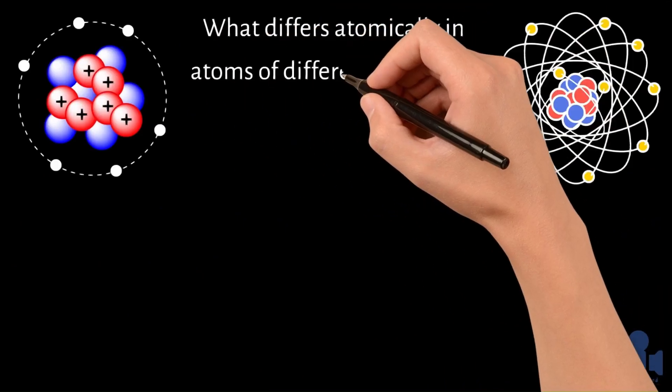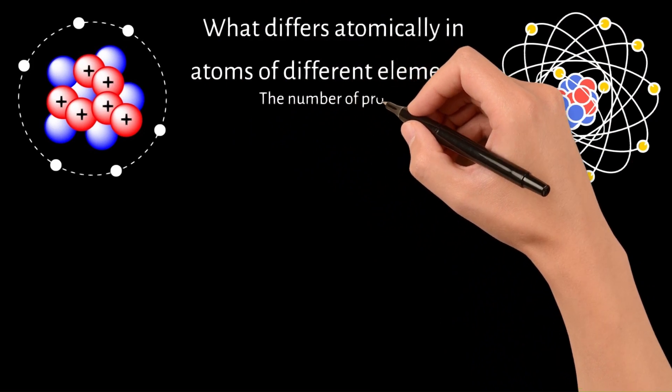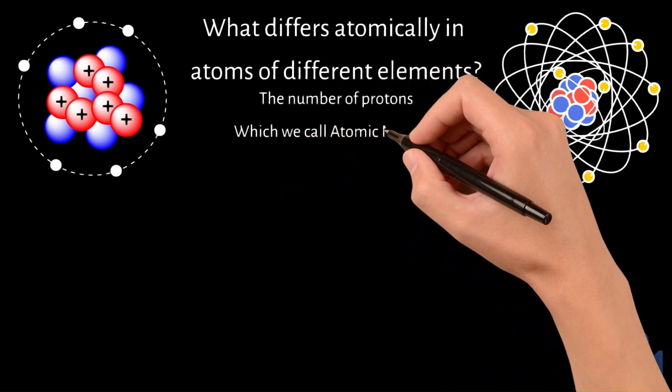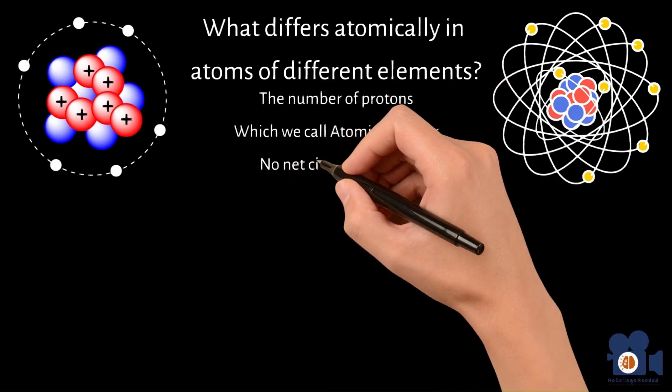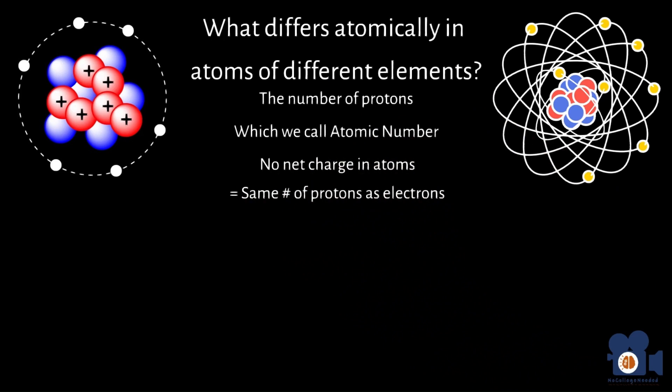So what makes the atoms of one element different than those of another? Fundamentally, it is the number of protons in the nucleus of that atom. That number of protons is the element's atomic number. Since atoms don't have a net positive or negative charge, there is the same number of electrons as protons.